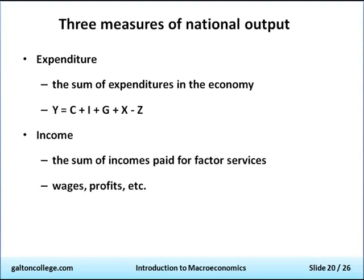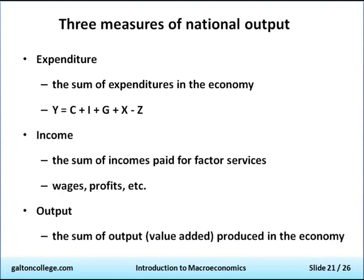That covers expenditure. The income side of the accounts is the sum of incomes paid to the factor services — so wages go to workers, profits go to entrepreneurs, and so on. Output is the sum of the total output that we produce. If you think about these three measures — expenditure, income, and output — they must be equal. So if you spend a sum of money purchasing a book, that sum of money is income for the person receiving it, the bookseller.